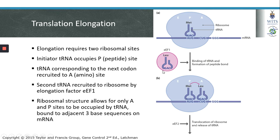This transfer RNA is recruited to the ribosome by an elongation factor called EEF1. Due to the structure of the ribosome, only two transfer RNAs can be bound to an mRNA strand at the same time. These two transfer RNAs are also bound to adjacent three-base sequences on the mRNA strand.